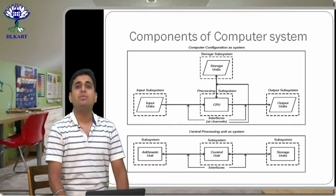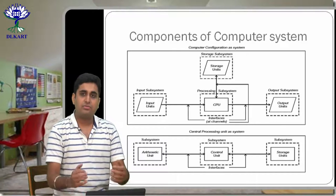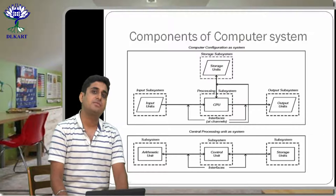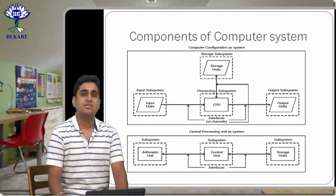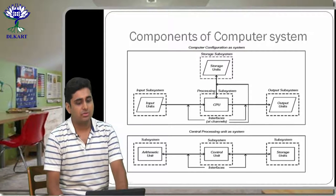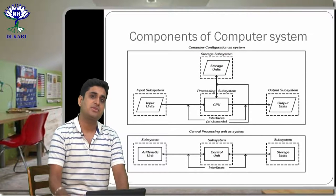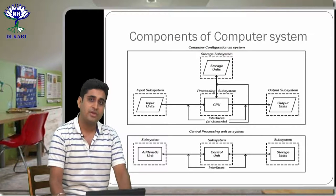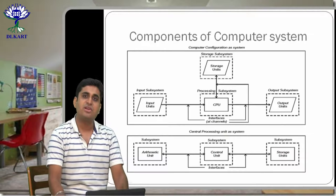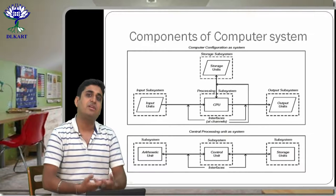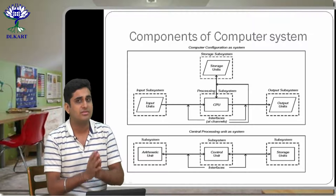Then there is the central processing unit, your CPU, which consists of several other subsystems. Along with that, it is attached to a storage system, which is also one of the subsystems of the entire system. Within this storage subsystem there are several different types of storage mechanisms and storage systems.